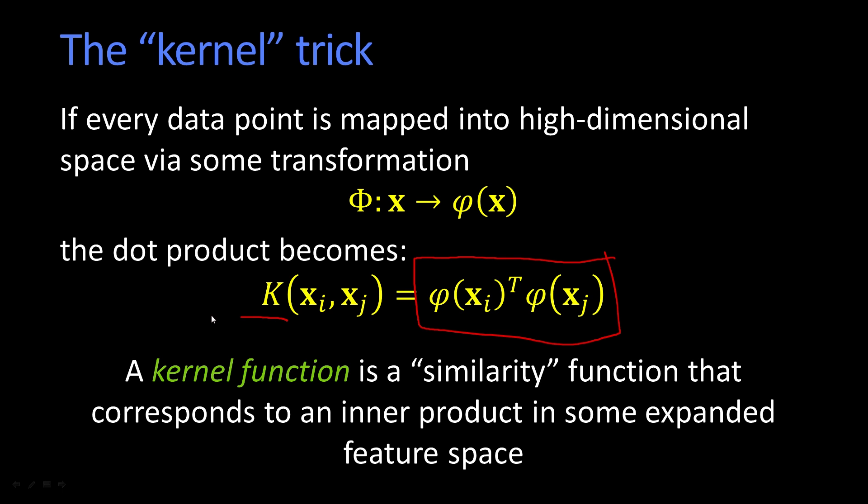k stands for kernel. And it's a kernel function, and it can be thought of as a similarity function. Similarity functions, the idea is that they get bigger, more similar things are. Dot products can go from minus 1 to 1. So the idea is being the most similar is 1, least similar is minus 1.